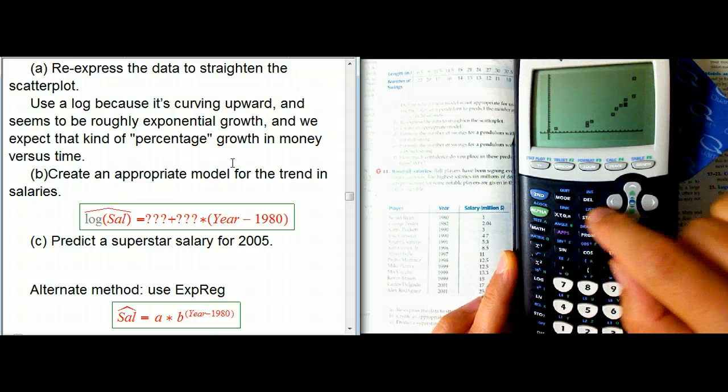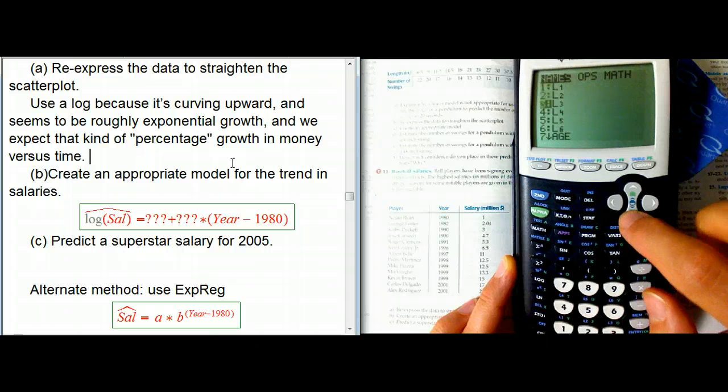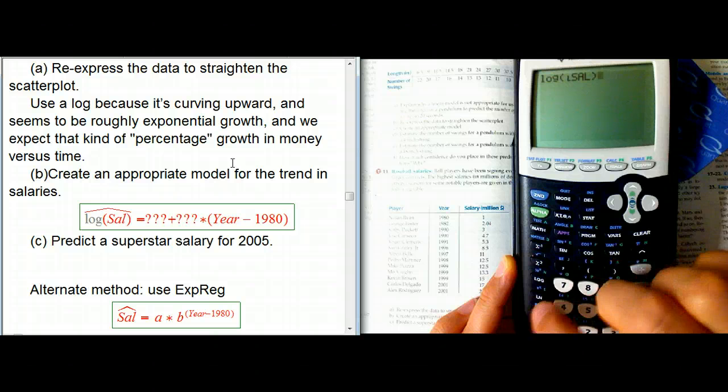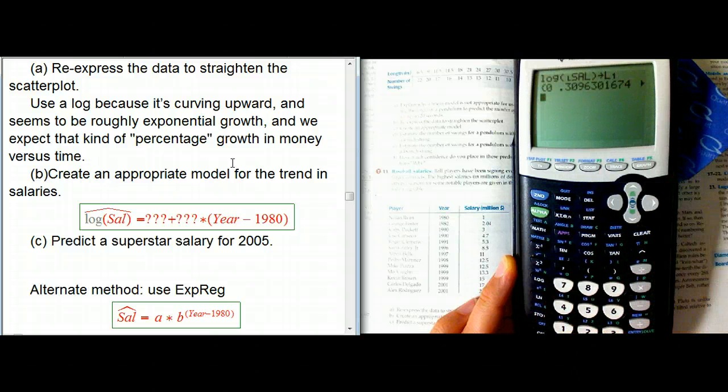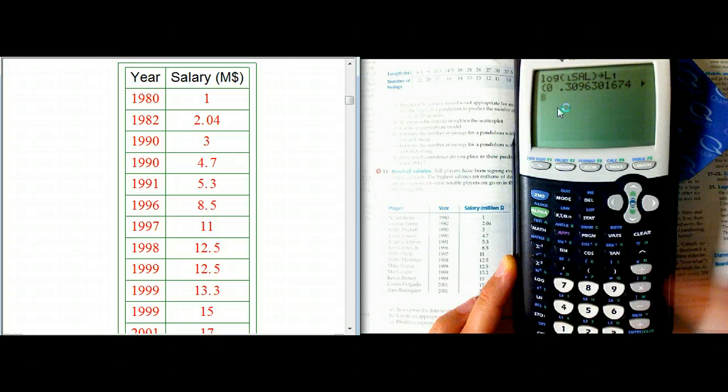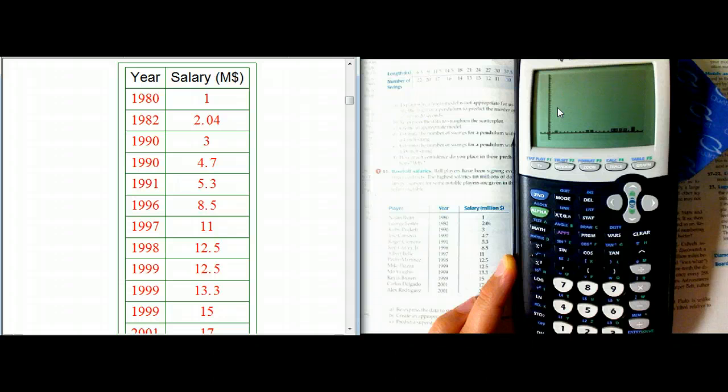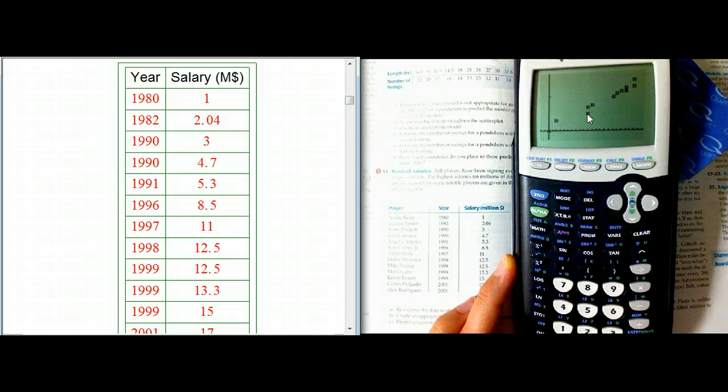So we can do that. Let's quit out and take the logarithm of salary and store that in list 1. There's the numbers starting with 0. The salary of $1 million is now becoming 0, just like I did with the years, making 1980 into 0. Now we can do a different stat plot, L2 versus L1. Of course, it doesn't look very good, so we zoom 9 it. That does look pretty straight. We're going to check the linearity and correlation in a minute.